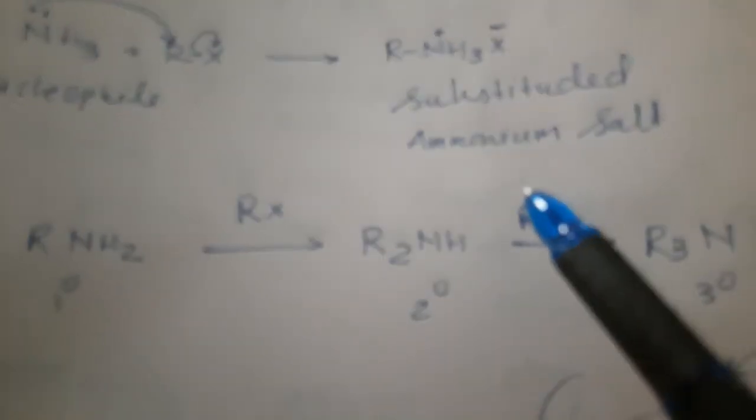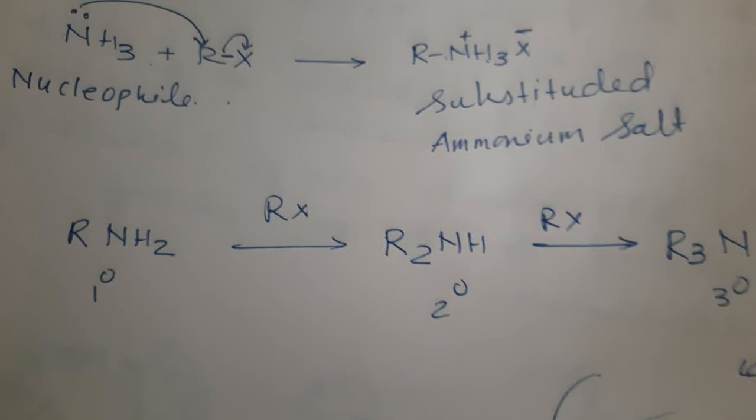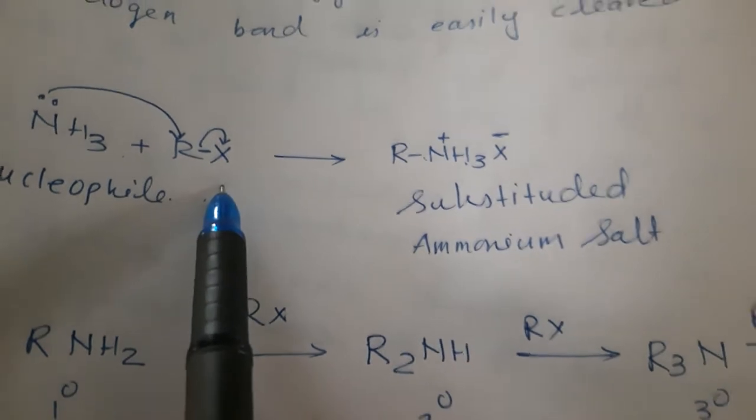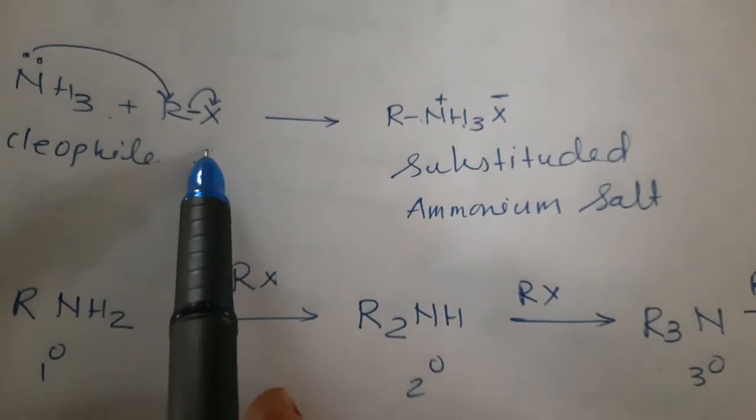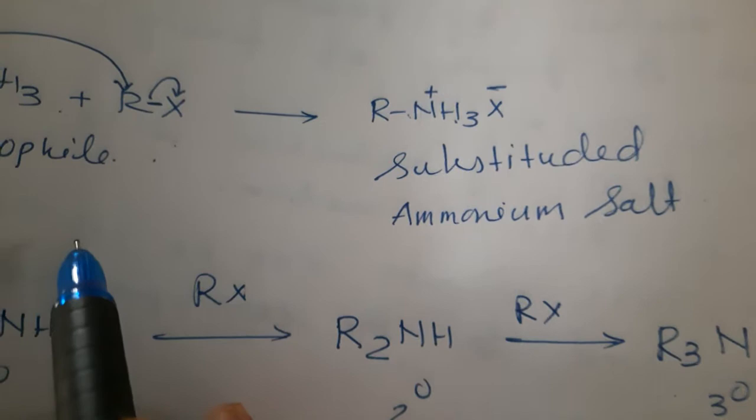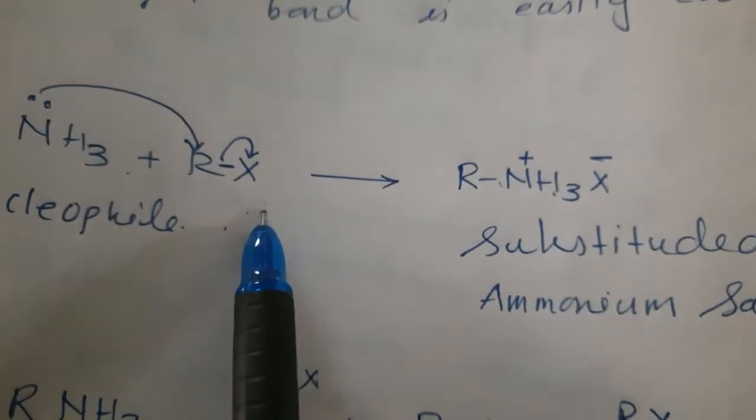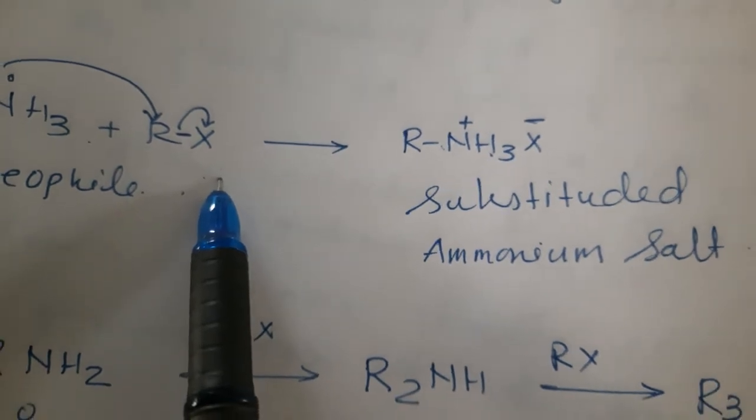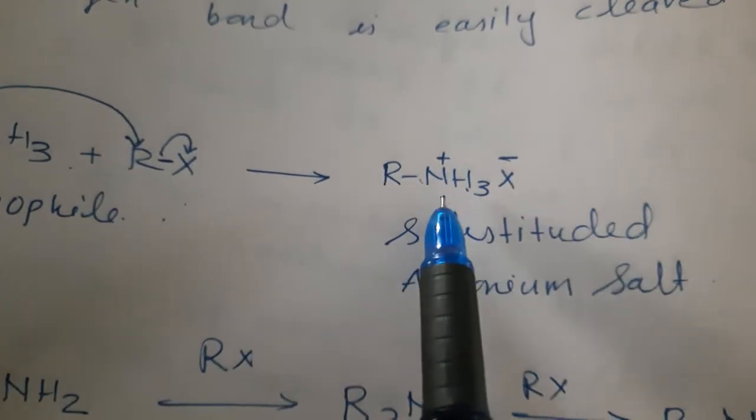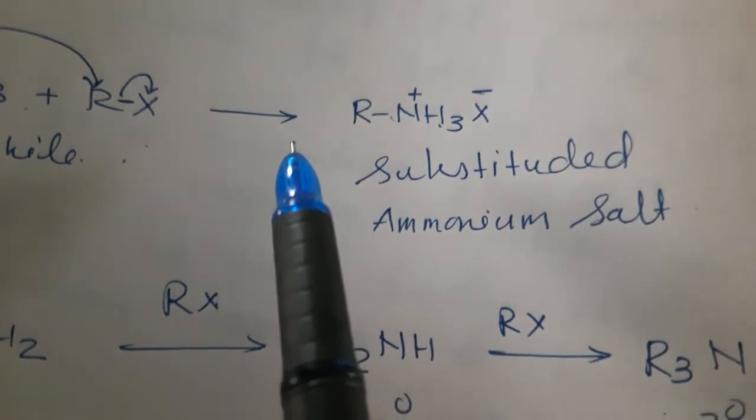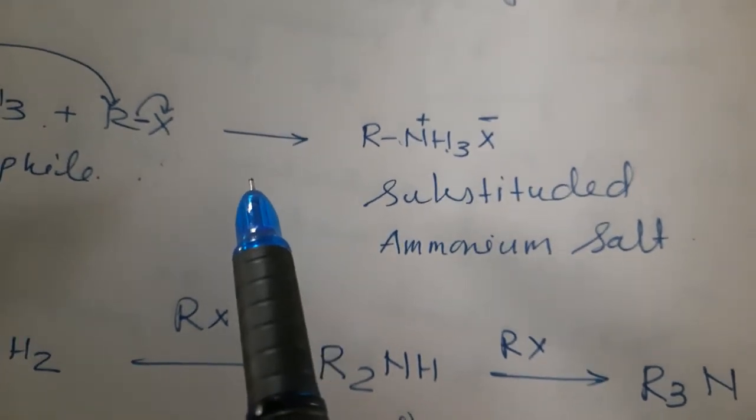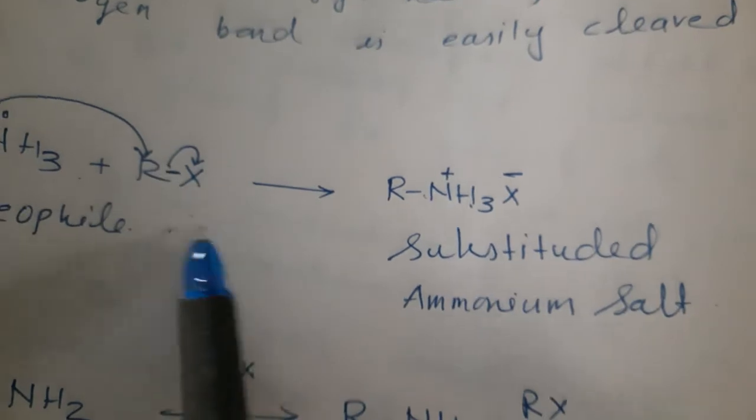If you see, Carbon-Halogen bond in Alkyl or Benzyl halide can easily be cleaved by a nucleophile. So, an Alkyl or Benzyl halide on reaction with an ethanolic solution of ammonia undergoes nucleophilic substitution reaction in which halogen atom is replaced by an amine group. So, halogen is removed, X is replaced by an amine group.